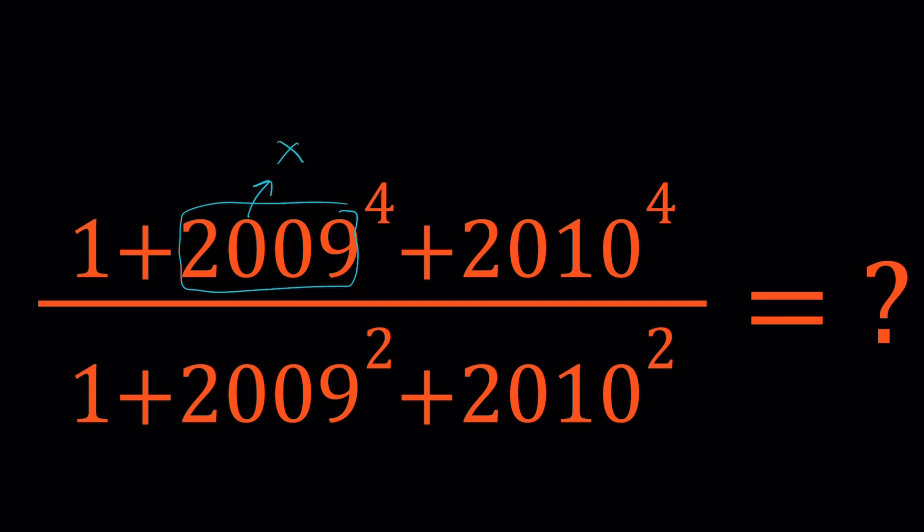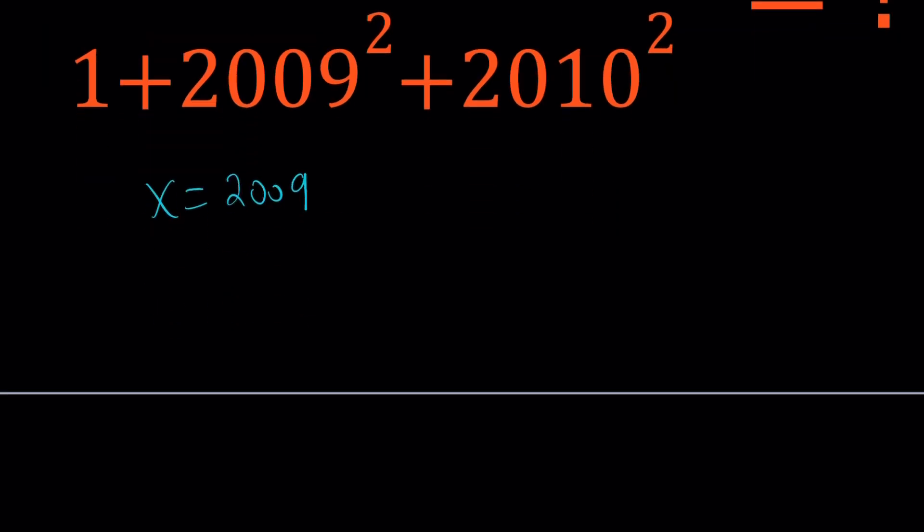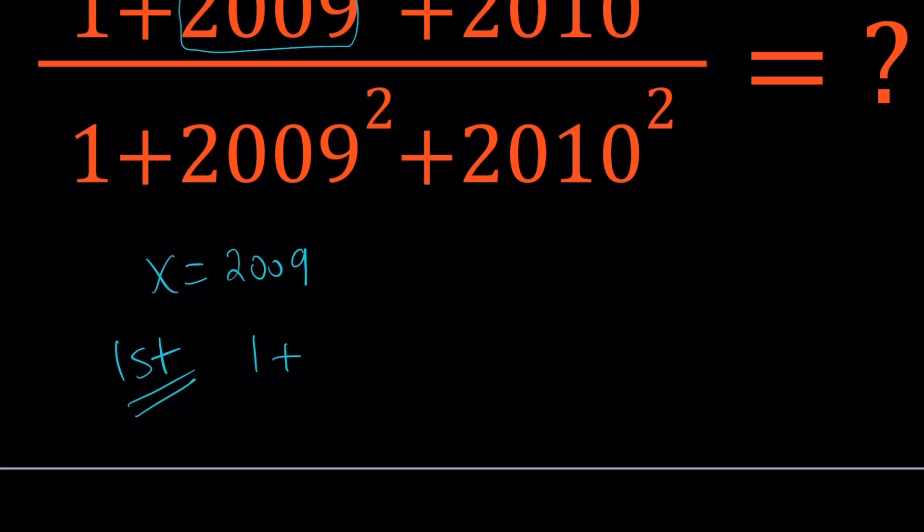x equals 2009. Let's write it down. And now, I'll be presenting two methods. And let's start with the first method. So when I basically replace x with 2009, I'm getting 1 plus x to the 4th, because 2009 is equivalent to x, plus, and 2010 is 1 more than 2009, isn't it? So it's going to be x plus 1 raised to the 4th power. That's our numerator.